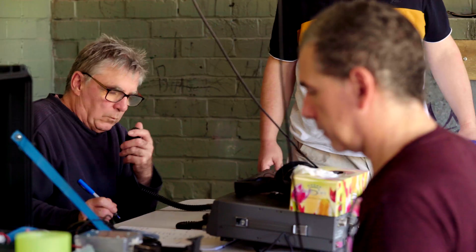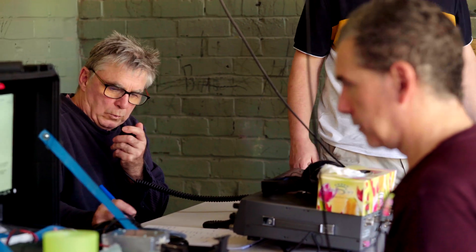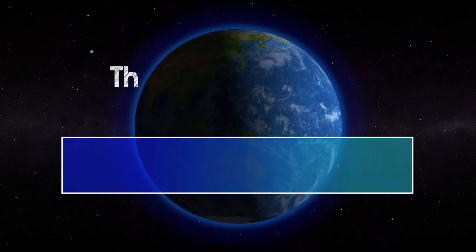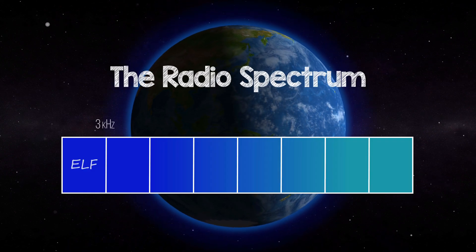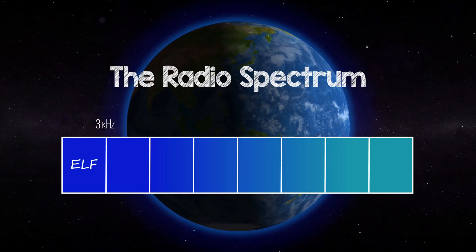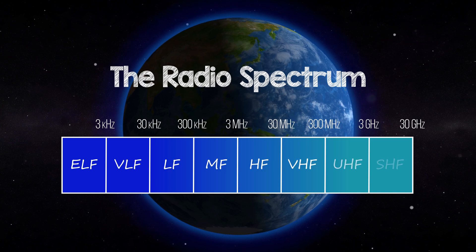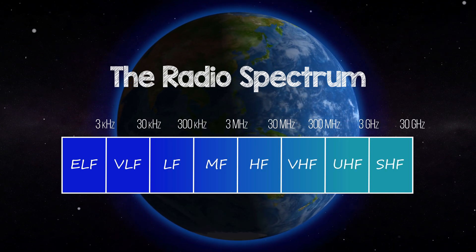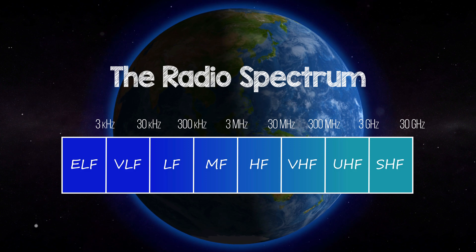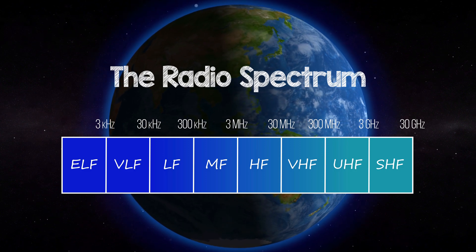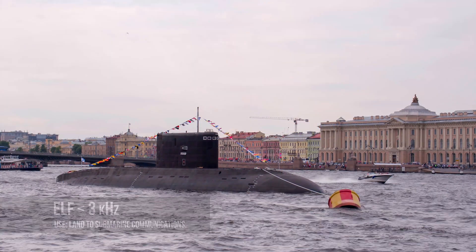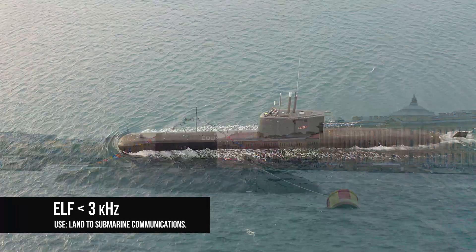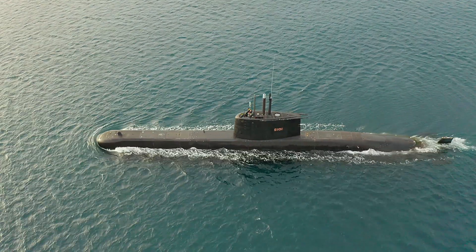Radio frequencies are affected differently by the ionosphere. The spectrum is divided predominantly into eight ranges, from ELF, or extremely low frequency, to SHF, or super high frequency. Extremely low frequency is less than 3 kHz. Its earth-ionosphere waveguide penetrates seawater, so its primary use is land-to-submarine communications.